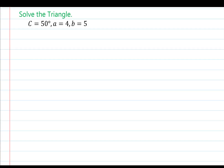Let's now use this information to solve a triangle where we're given angle C, side a, and side b. I'm going to draw a picture to illustrate what we have and what we need to find. I'll put angle C on the bottom left-hand vertex, side a here which is four units, and side b here which is five units. I need to find side c, angle A, and angle B.